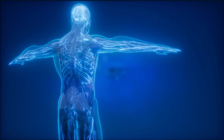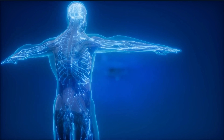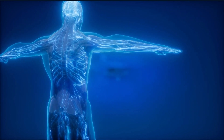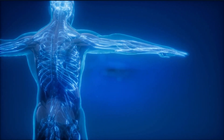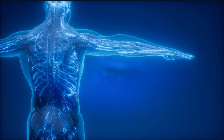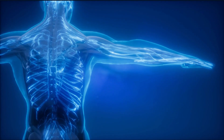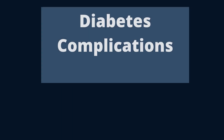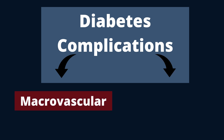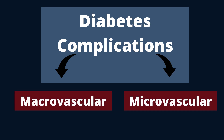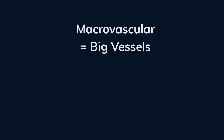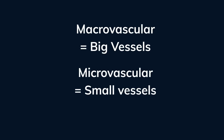Diabetes is what we call a systemic disease. It basically means it could affect every system in your body. A common way we screen for complications in our patients is to divide the complications into macrovascular and microvascular complications — macro being big vessels and micro being small vessels.